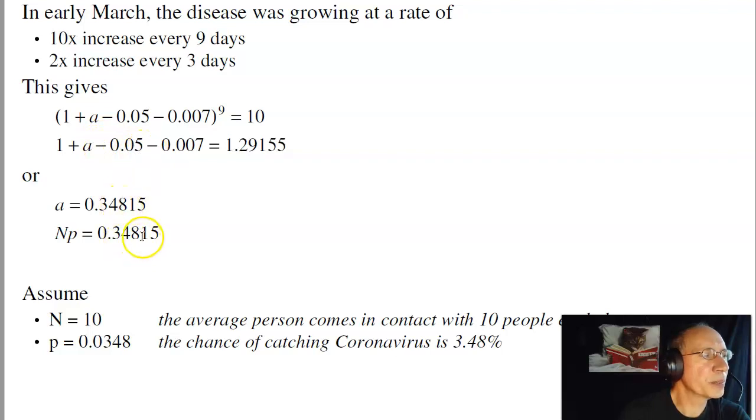Now how you come up with that mathematically doesn't matter. For the study, let's just assume each person comes in contact with 10 people, meaning the probability of transmission is 3.48%, for an NP of 0.348.